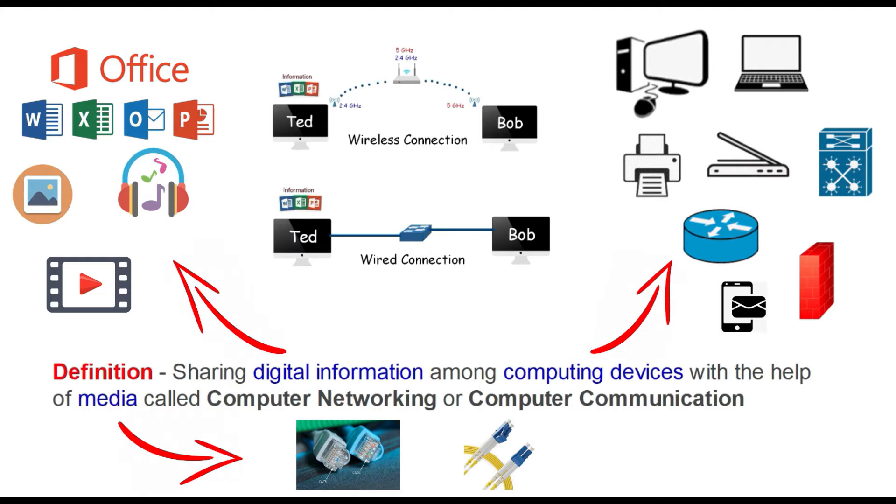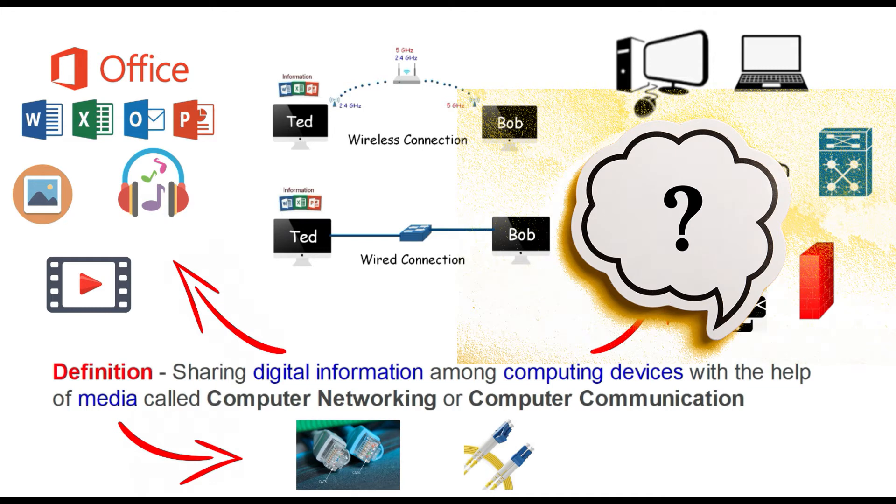In an earlier example, we saw what computer networking is and we were able to understand that computer networking means sharing information among computing devices with the help of media. So the main reason for having computer networking is to share information.